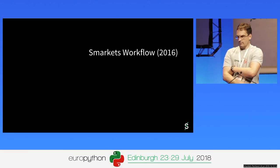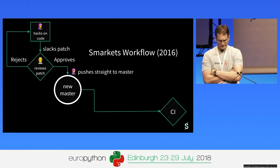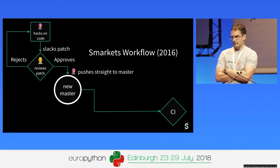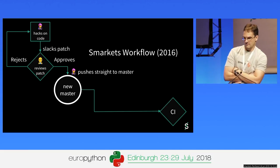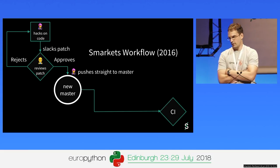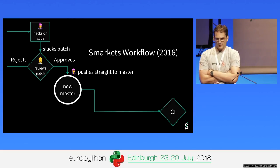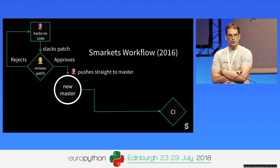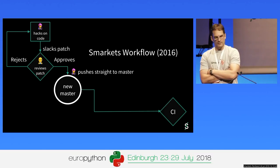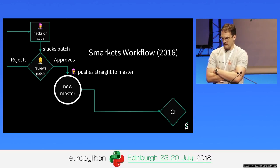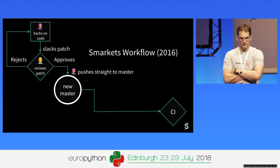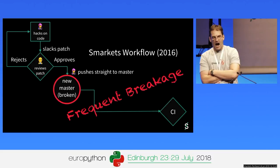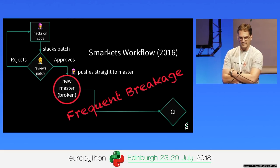Let me start out with mentioning the Smarkets workflow as it was when I started. Basically, Alice the rockstar coder wrote some code and sent a patch via Slack to Bob the software builder. Bob either rejected it — in which case they'd go back to square one — or approved it, in which case Alice pushed it straight to master with some additional meta information for auditing purposes. Then CI was run. This is not ideal because it caused frequent breakage. In principle developers were meant to test things thoroughly before pushing, but it's much better to automate that with CI.